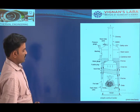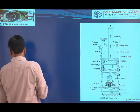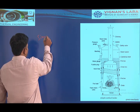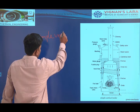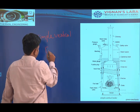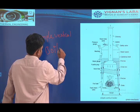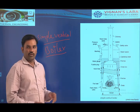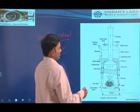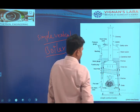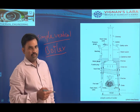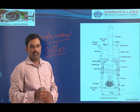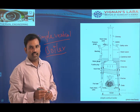Here I am showing a simple vertical boiler. In case of a vertical boiler, the shell of the boiler is vertical — the axis of the boiler shell is vertical. You can observe that all types of boilers have different boiler mountings and boiler accessories.